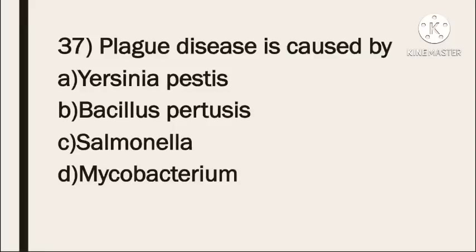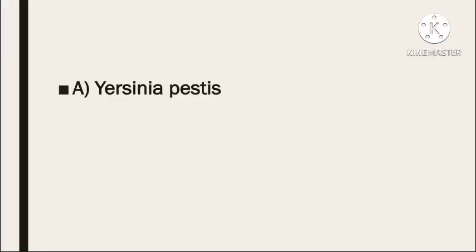Next question: plague disease is caused by — Option A: Yersinia pestis. Option B: Bacillus pertussis. Option C: Salmonella. Option D: Mycobacterium. The correct answer is Yersinia pestis — it causes plague disease.